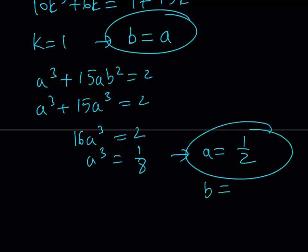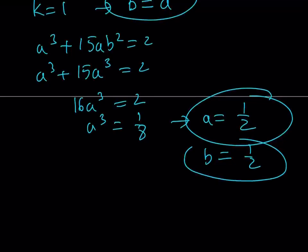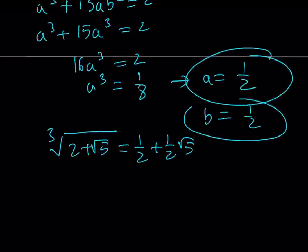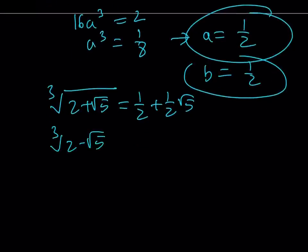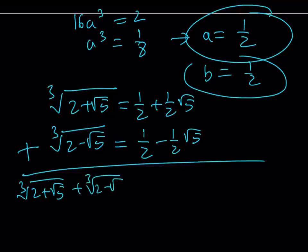Since a equals 1 half, b is also equal to 1 half because a and b are equal. So the cube root of 2 plus root 5 can be written as 1 half plus 1 half root 5. And by the binomial theorem, the cube root of the conjugate is also the conjugate, so it's 1 half minus 1 half root 5. Adding these two together — which is what we're looking for — gives 1 half plus 1 half, which equals 1.